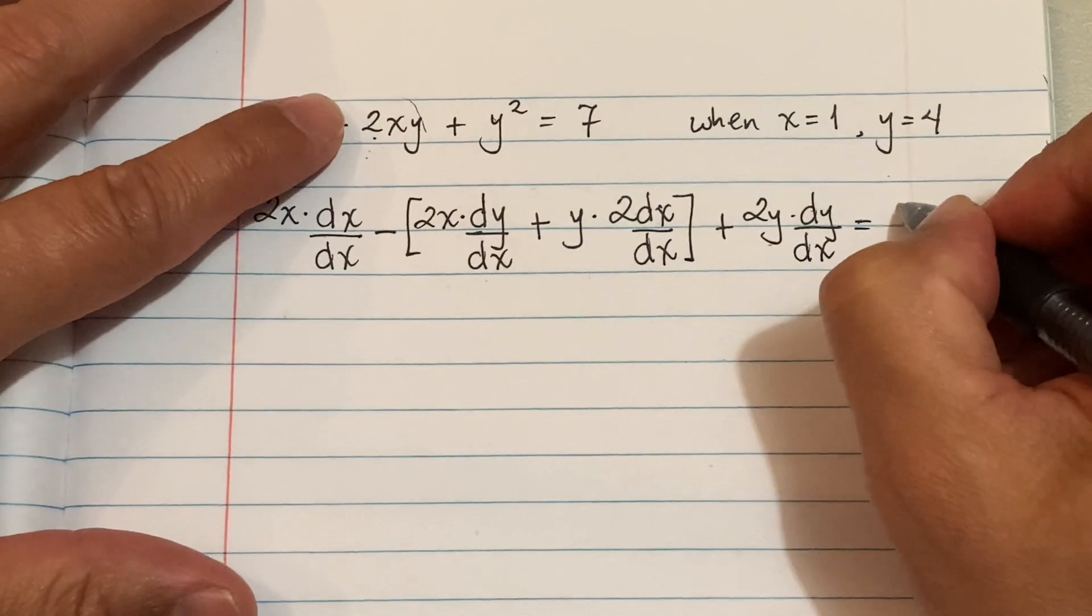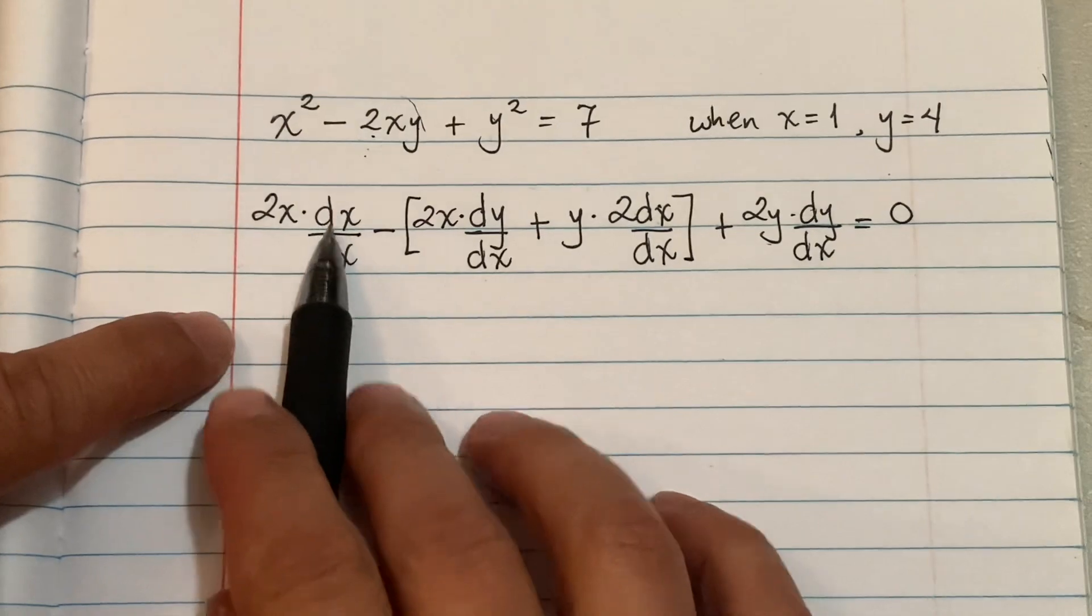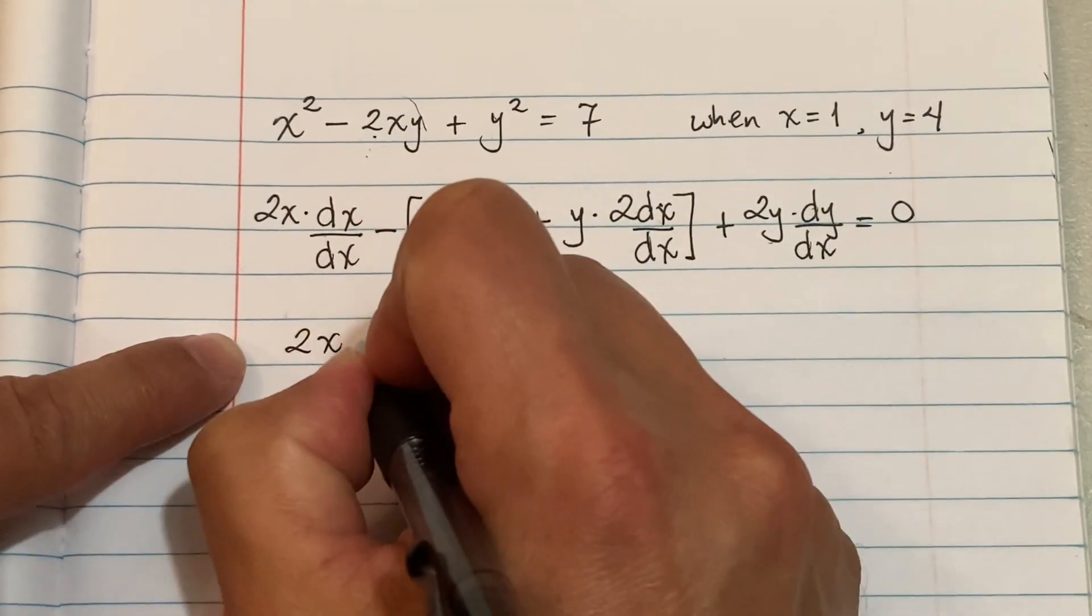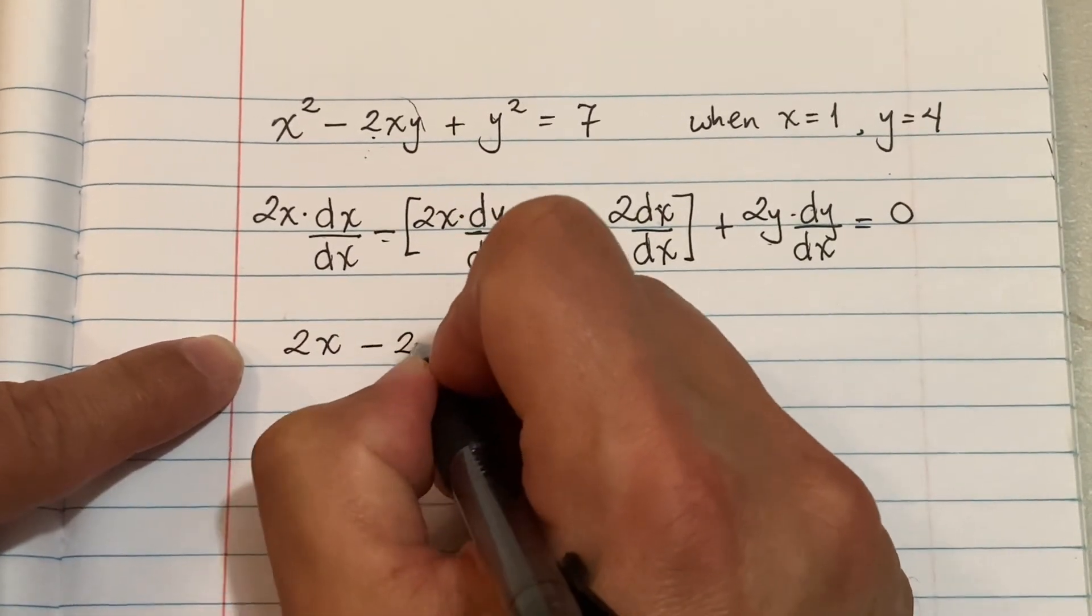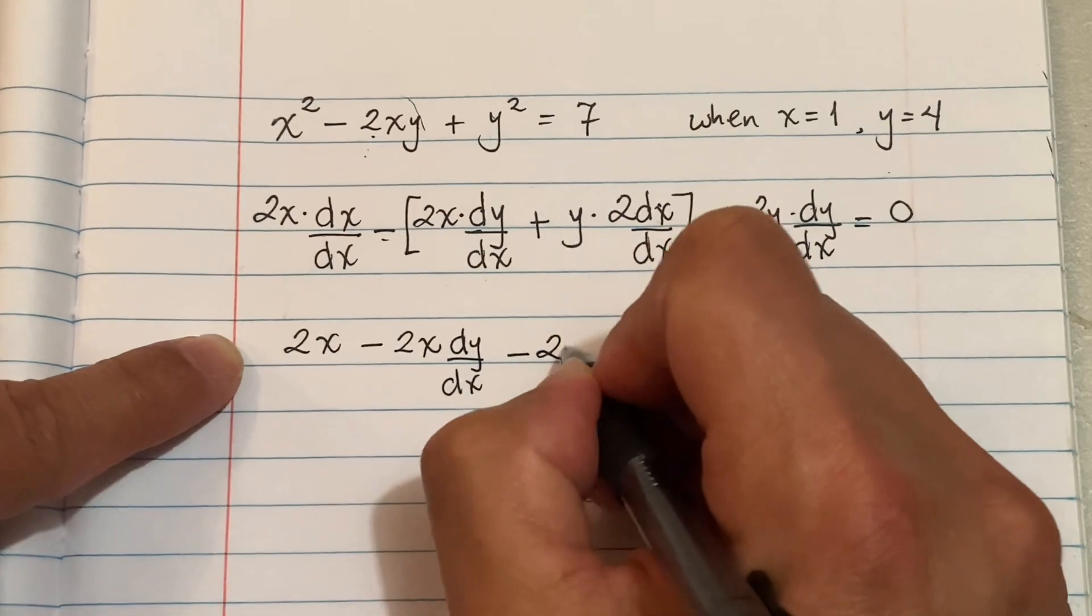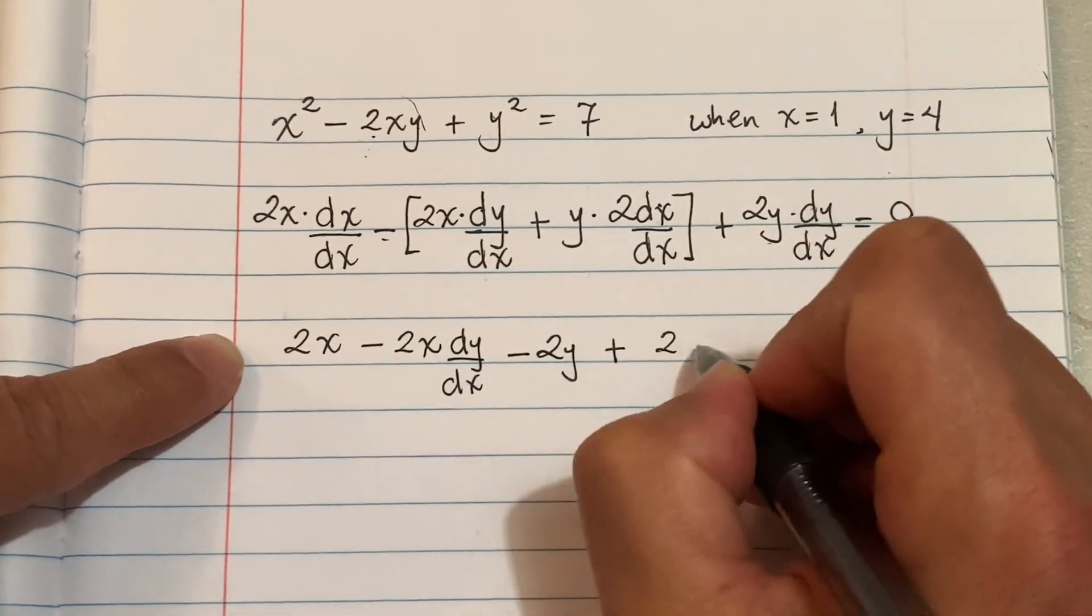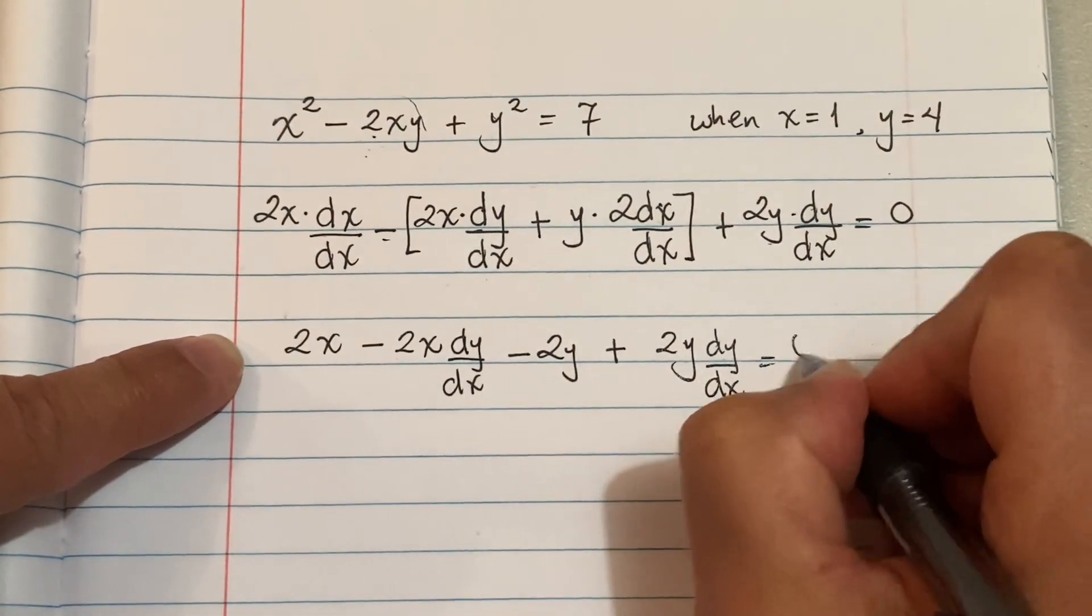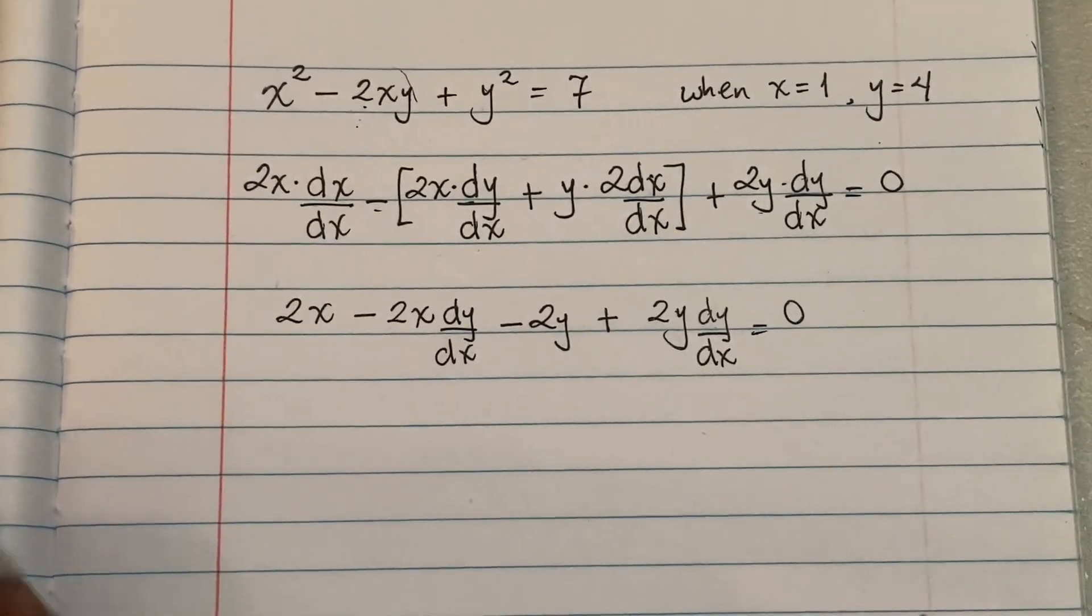...the derivative of 7, a constant, is 0. Now let's clean it up. This becomes a 1, that becomes a 1, so we're gonna end up with 2X. I'm gonna now distribute my negative, so we're gonna get minus 2X dy/dx, and then we're gonna get minus 2Y—this becomes a 1—and then we're gonna get plus 2Y dy/dx and that's gonna equal 0.